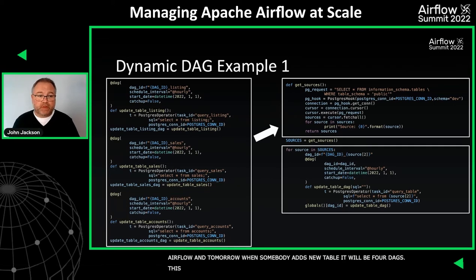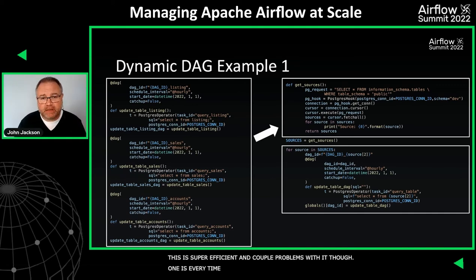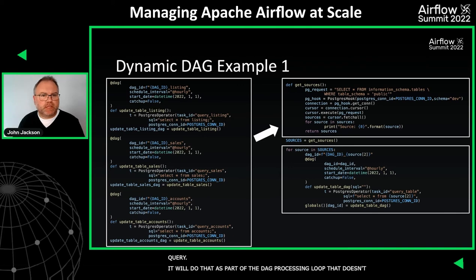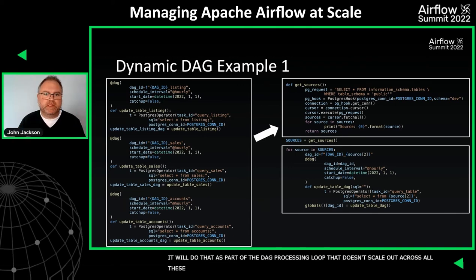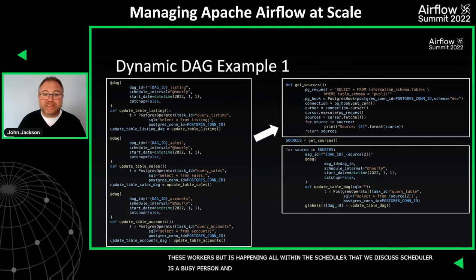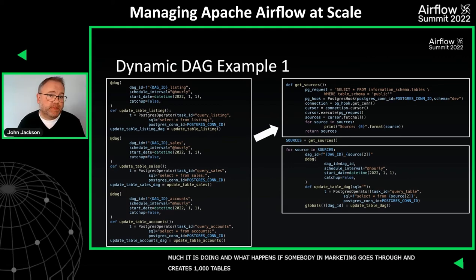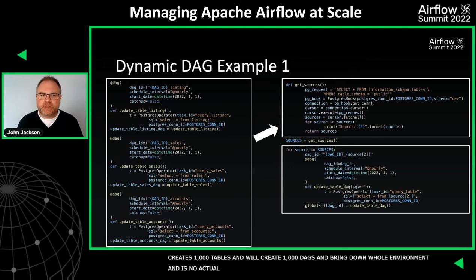This is super efficient, but there are a couple of problems. Every time DAG parsing runs, it goes out to that database and runs a query — happening within the scheduler, which doesn't scale out across workers. And there's no control on how much it's doing. If someone creates a thousand tables, it'll create a thousand DAGs and potentially bring down the whole environment. You have to be very careful when using these dynamic approaches.